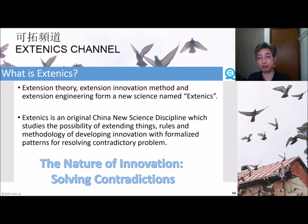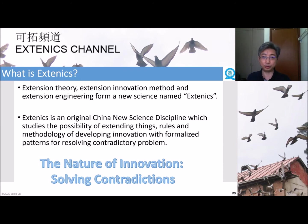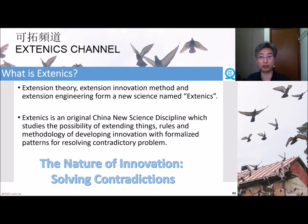Extension theory, Extension Ignorations method, and Extension engineering form a new science named Extenics. Extenics is an original Chinese new science theory which studies the possibility of extending fixed rules and methodology of developing innovation with formalized patterns for resolving contradictory problems. We always talk about how the nature of innovation starts from solving contradictions.